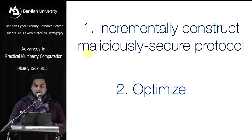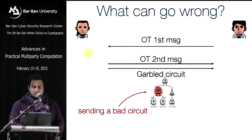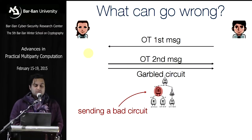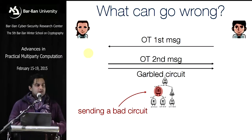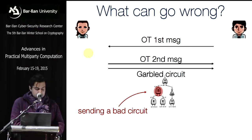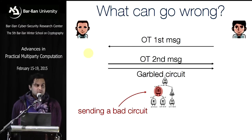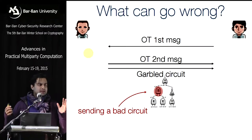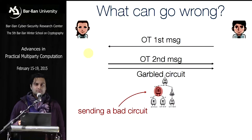Let's consider what can go wrong in the two-message honest-but-curious protocol. The first message is an OT setup; the second is the garbled circuit. The first obvious way Alice can cheat is by sending a bad circuit — for example, she corrupts one gate, changing an AND gate to something else. The theory of GMW suggests using zero-knowledge proofs to defend against cheating: Alice proves that her circuit is a good circuit.